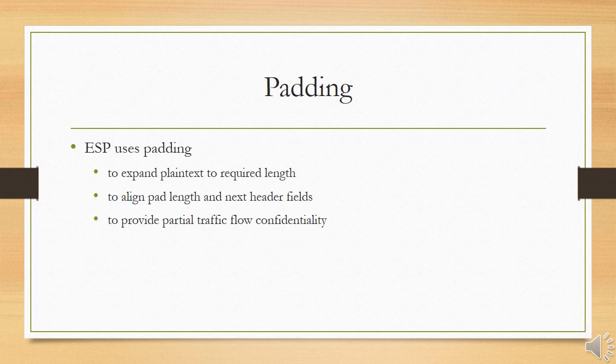The padding field serves several purposes. If an algorithm requires the plaintext to be a multiple of some number of bytes — for example, a multiple of a single block for a block cipher — the padding field is used to expand the plaintext, which consists of payload data, padding, pad length, and next header fields, to the required length. The ESP format also requires that the pad length and next header fields be right-aligned within a 32-bit word, meaning the ciphertext must be an integer multiple of 32 bits. Additional padding may be added to provide partial traffic flow confidentiality by concealing the actual length of the payload.